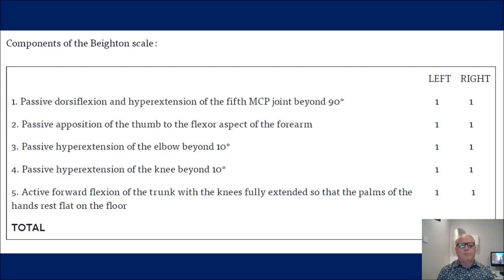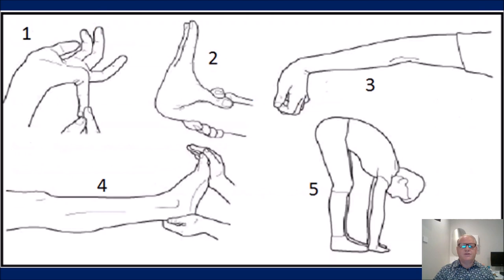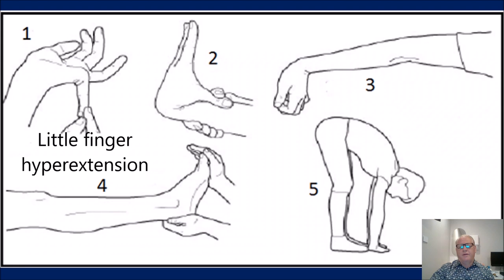Another important aspect, particularly with ankle scans, is knowing the Beighton scale — five tests for hypermobility syndrome. We're finding more and more people presenting with these conditions, spraining their ankle without a high-grade causative activity, presenting with hyperflexibility or a positive anterior drawer test when in fact they're just hypermobile.